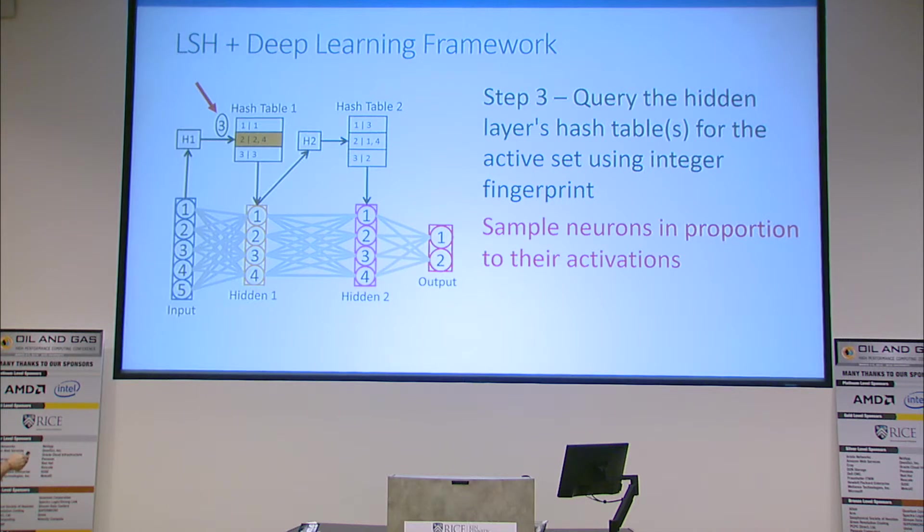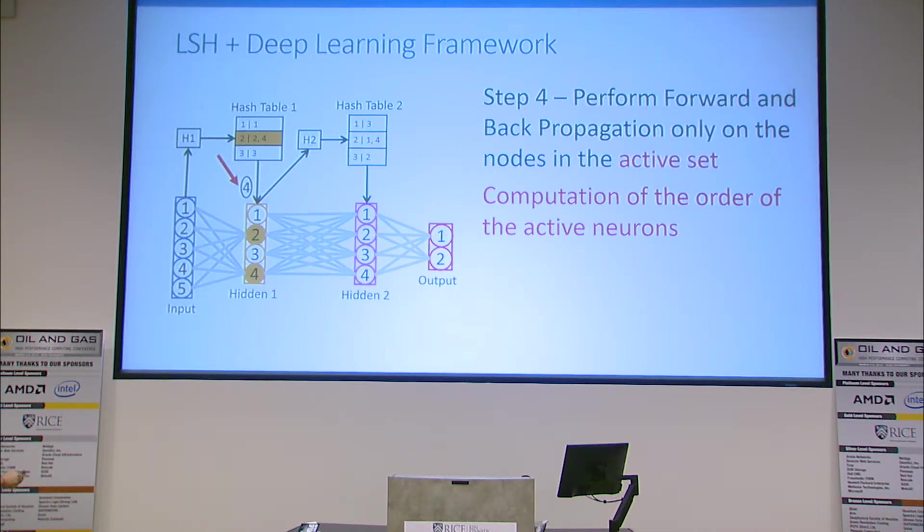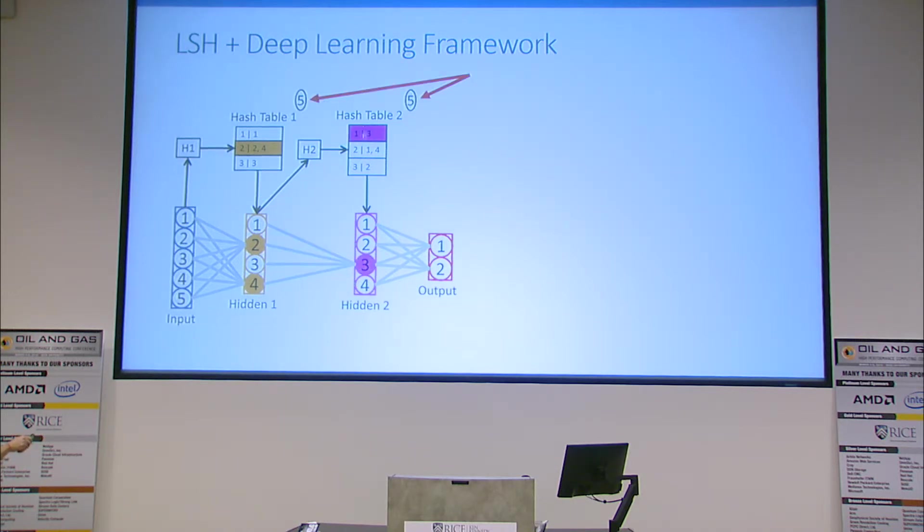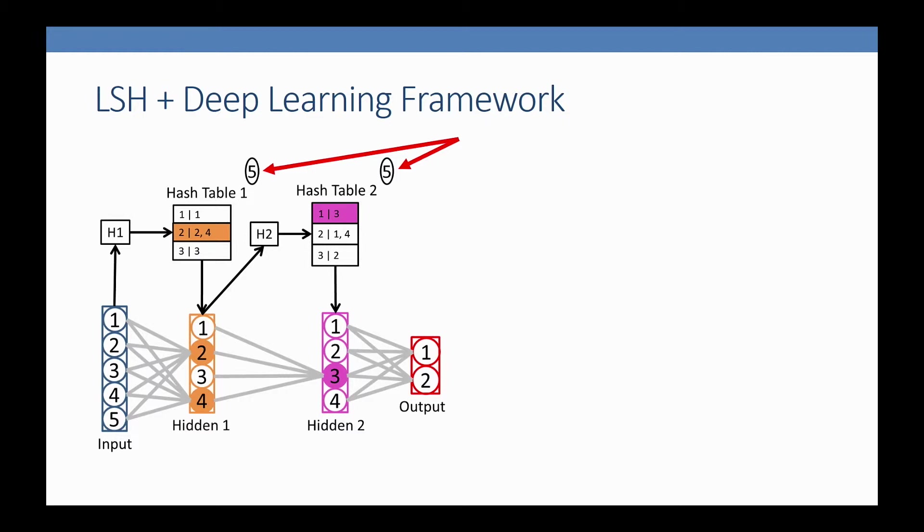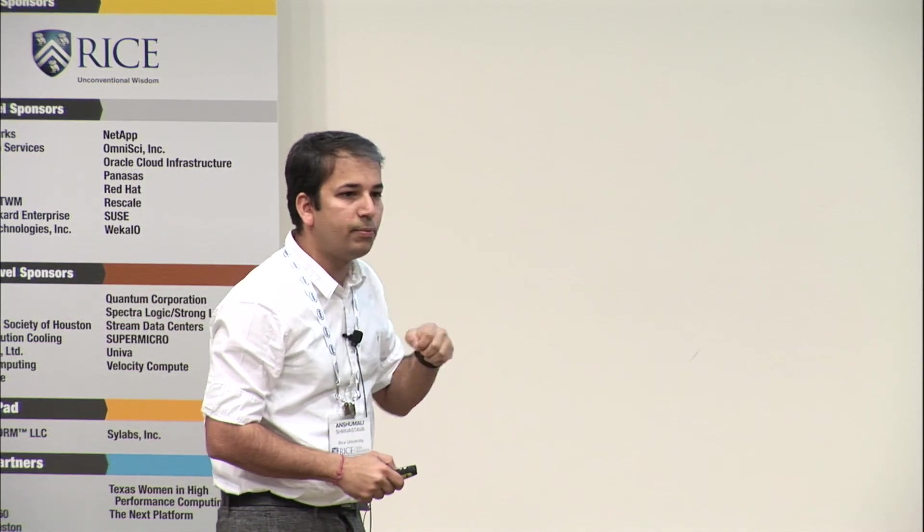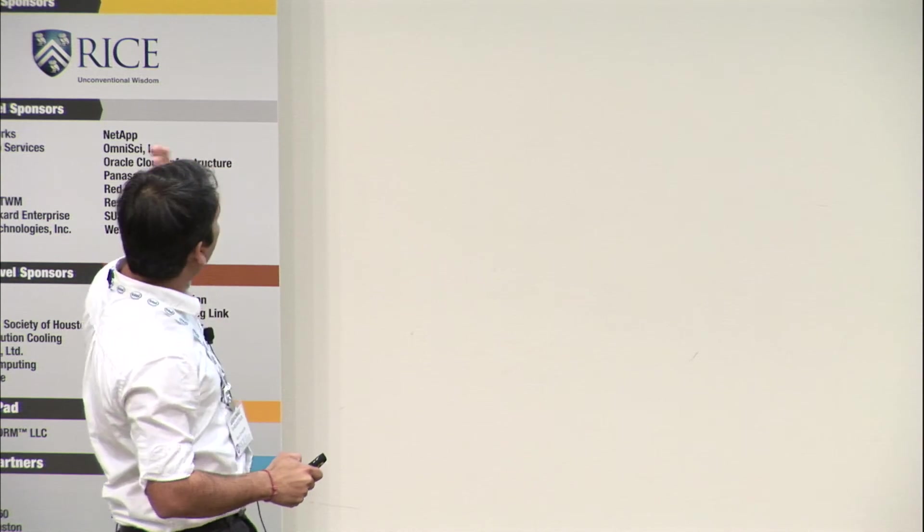When doing SGD training, given an input, I'll hash the input and go to a hash table, probe a memory location that tells me which nodes are active. Then I take this sparse pattern, hash, go to a hash table and probe a memory location to know which neuron will be active. I get a sparse snapshot of a network by few memory lookups. There's two or three years of work behind this for why we can do this for inner products. These are guaranteed to give high activation neurons by simple memory probes.